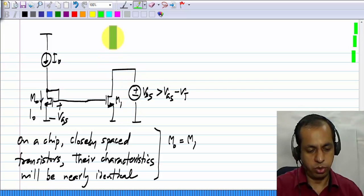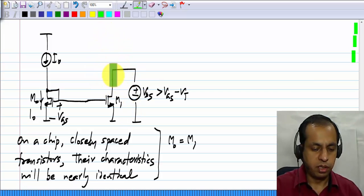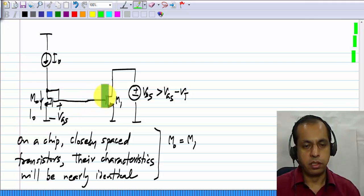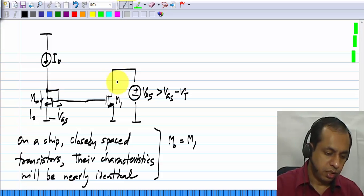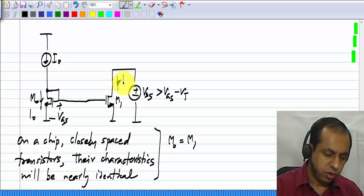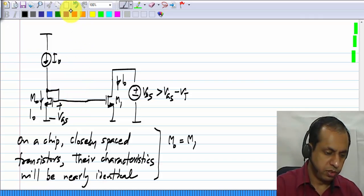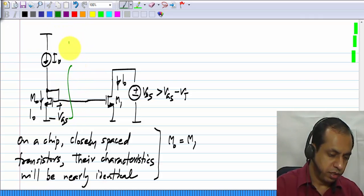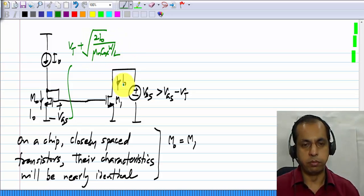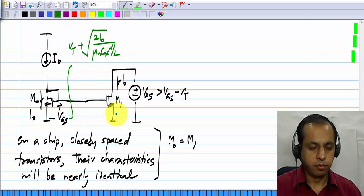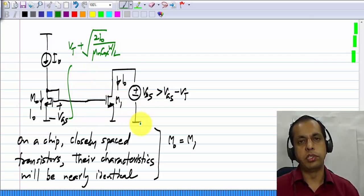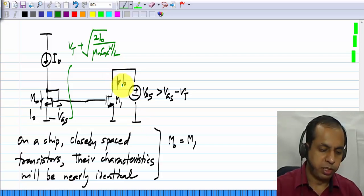In that case, if we apply this V G S to a transistor which is identical, then bias transistor M 1. This is just to show that there is some V D S more than V G S minus V T. It does not have to be a voltage source. You could connect any other circuit to this point, just make sure that the drain voltage is more than the gate voltage minus V T. If you do that, then the current flowing here has to be equal to I 0. I hope that part is clear, because the V G S value here is V T plus square root 2 I 0 by mu 1 C ox W by L, that is set by negative feedback. If this V G S is applied to another transistor, the current in that will be mu 1 C ox W by L divided by 2 times V G S minus V T squared, and that will be equal to I 0.